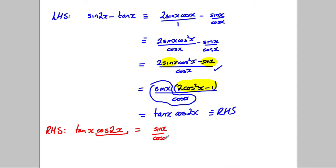That is sine x over cos x. And this here is 2 cos squared x subtract 1. And then expanded that out to get 2 sine x cos squared x subtract sine x. All of that over cos x.